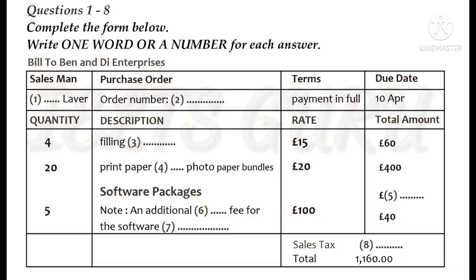Do you remember your order details? First there was the filing cabinets. 4 at a rate of £15 each. Didn't you order print paper as well? Yes, we're taking 20 glossy photo paper bundles. What's the unit price again? It works out at £20 per bundle, and £400 in total.